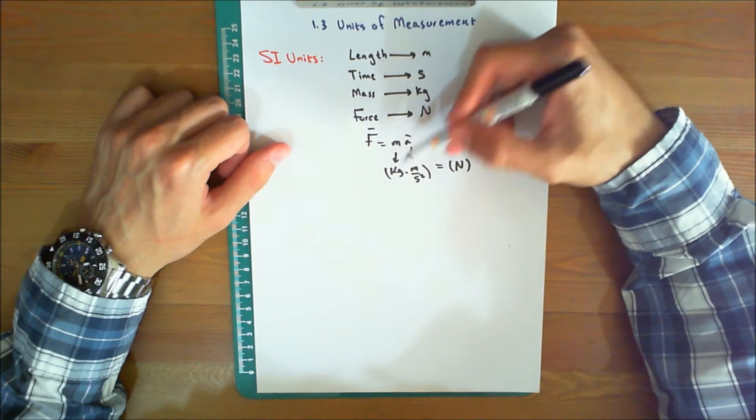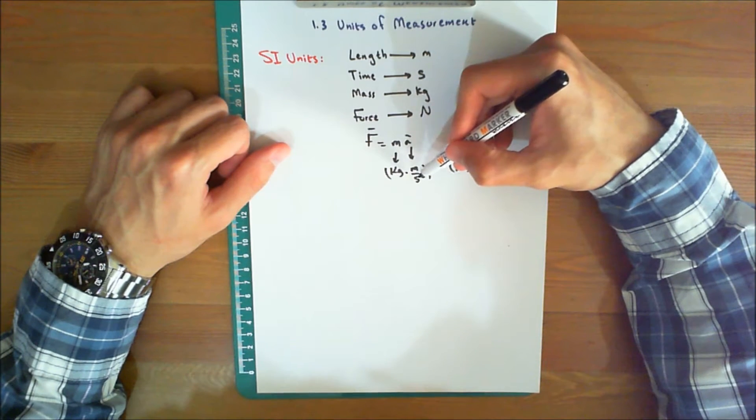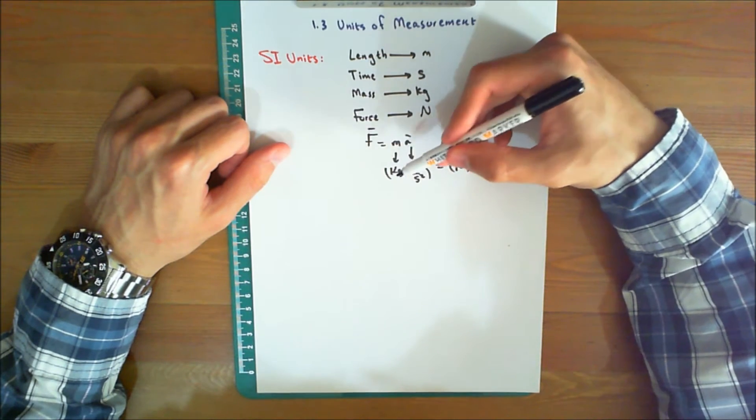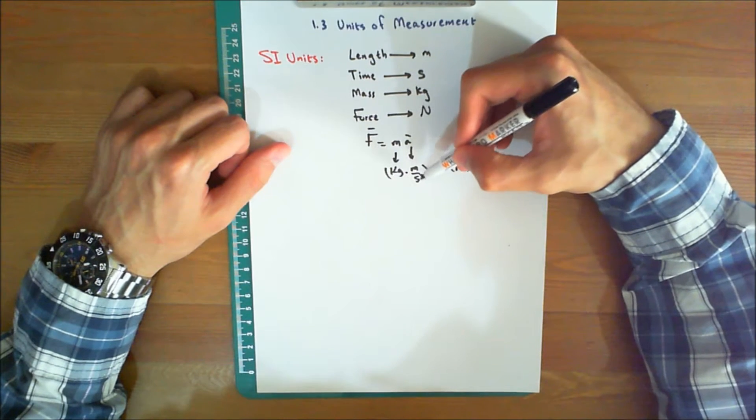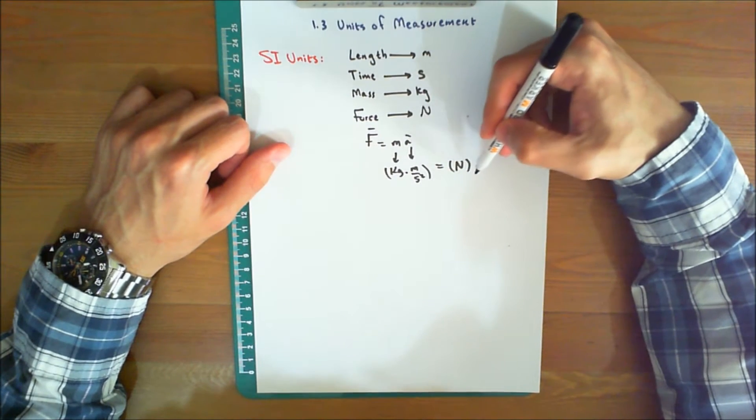So, mass is in kilograms, acceleration is in meter per second squared, and if you multiply those together, you get kilogram meter per second squared, and that would give you one newton.